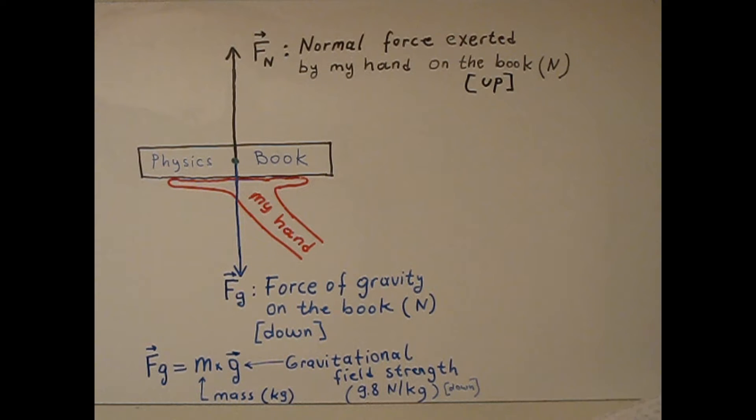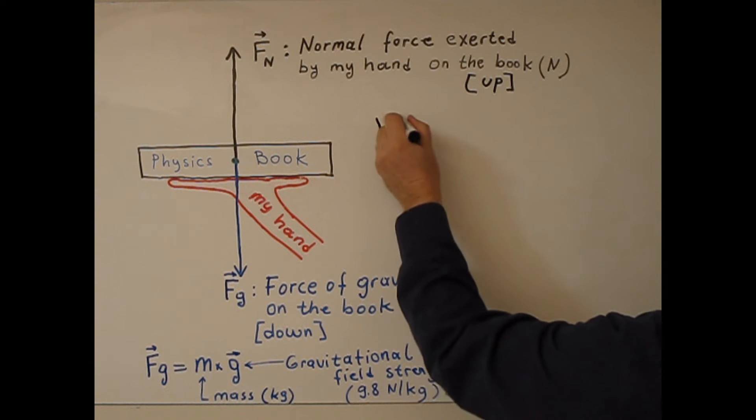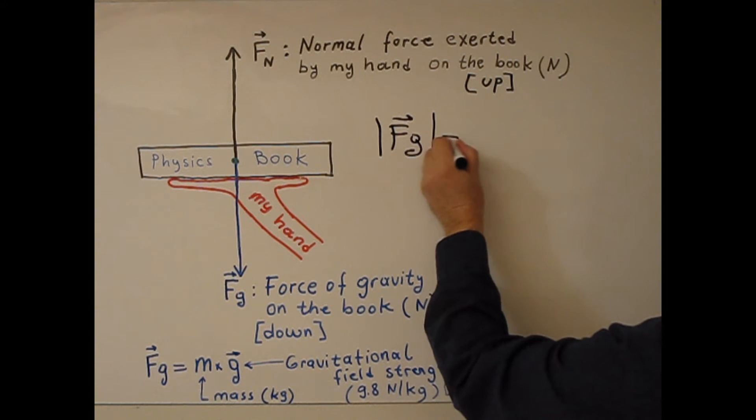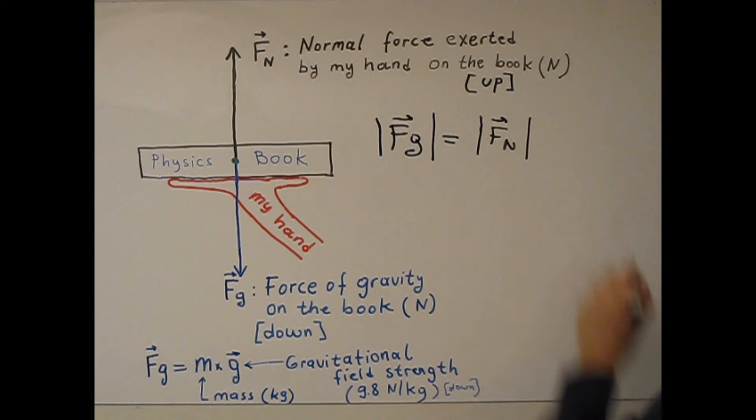Since the book and my hand is stationary, in this case magnitude of gravitational force equal magnitude of normal force. So they have same magnitude but different direction.